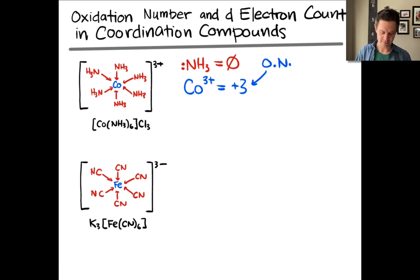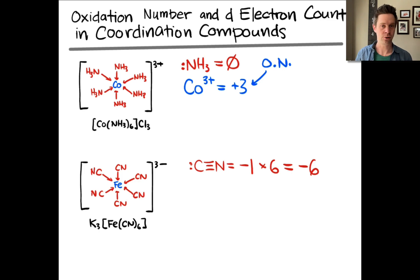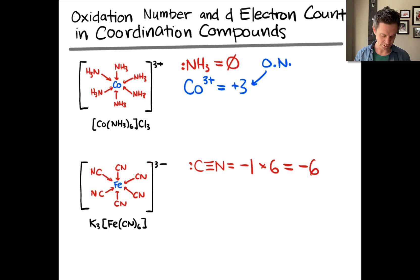The second case is more interesting. If we apply the same idea and think about the Lewis structure of cyanide, the charge on cyanide is negative 1. We've got 6 of those in this complex, so the total charge due to all the ligands is negative 1 times 6, or negative 6. We compare that to the overall charge of the complex: negative 6 due to the ligands, but the overall charge on the complex is negative 3. This means the iron must be responsible for 3 positive charges, bringing the total charge to negative 3.